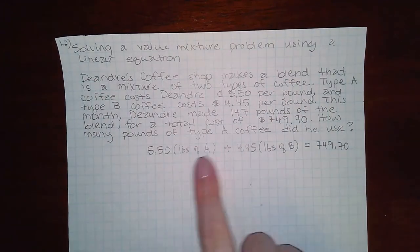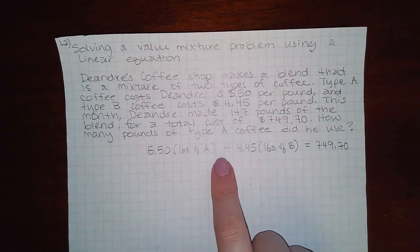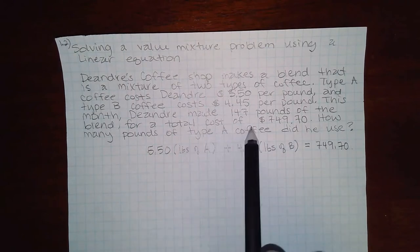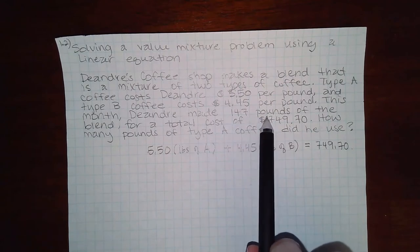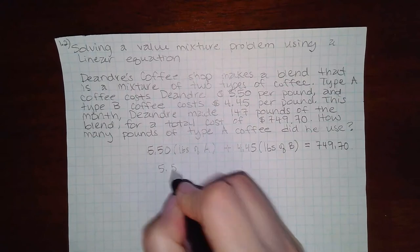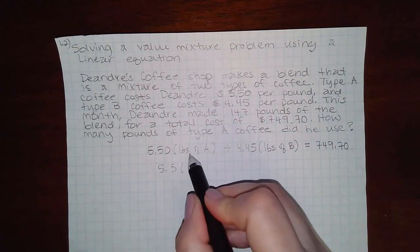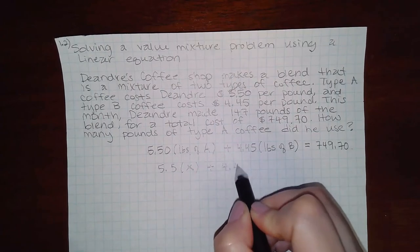The problem is we don't know what to use for this expression. Now, the other information that they gave me was that he made a total of 147 pounds. Which means, if I don't know how much of type A he used, I could just use the letter X.